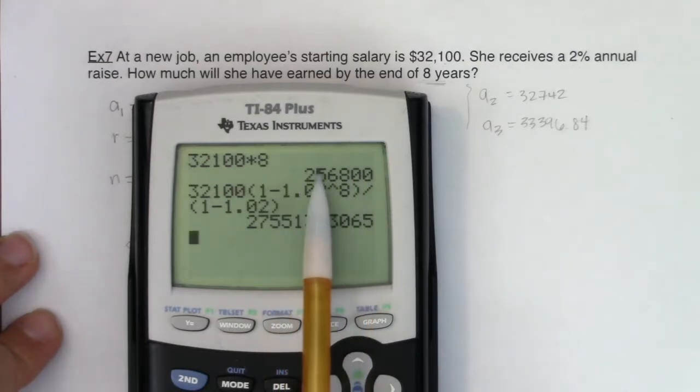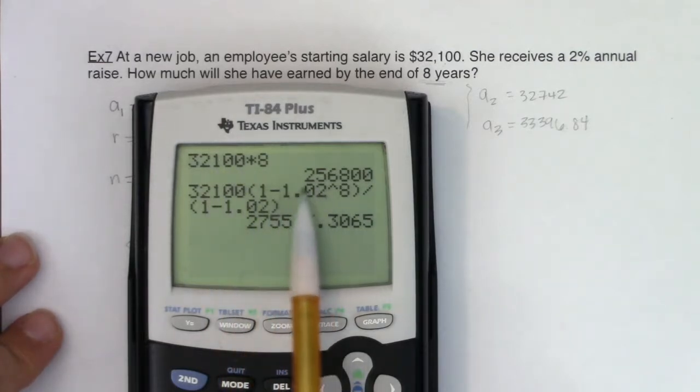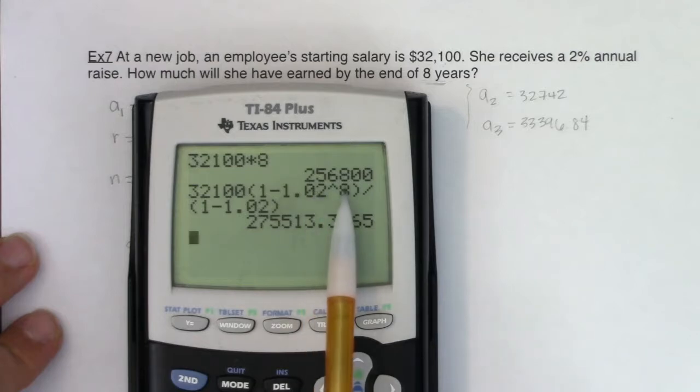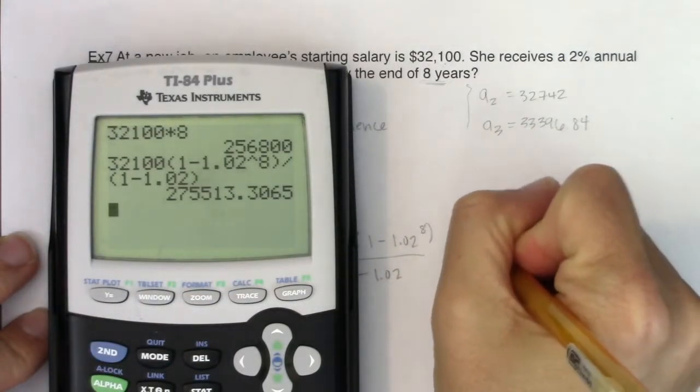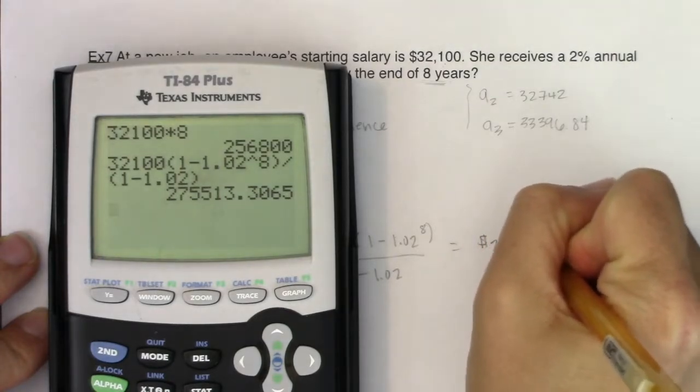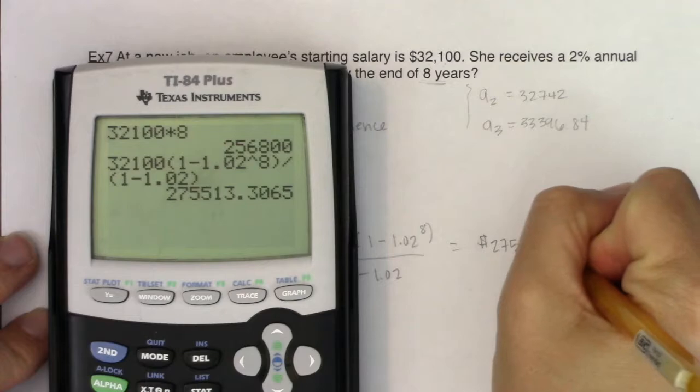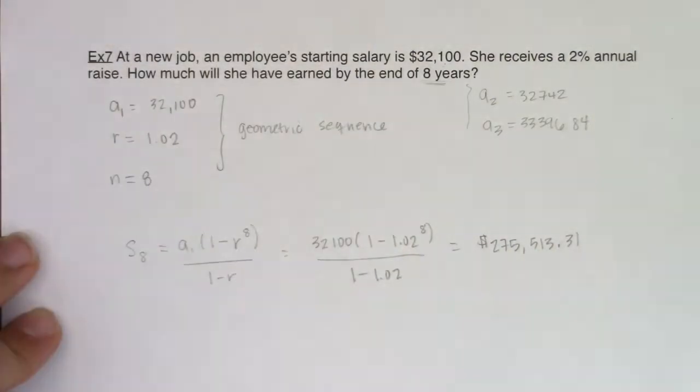So slightly more than our initial estimate, because in this estimate, she was not getting raises. In this estimate, she's getting a 2% raise every year for eight years. So her total is $275,513.31. That is how much she will have at the end of this eight years.